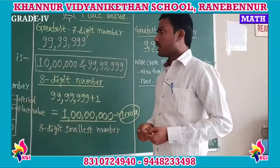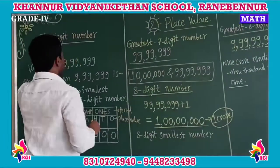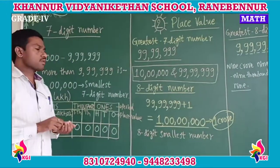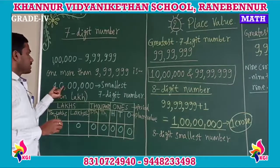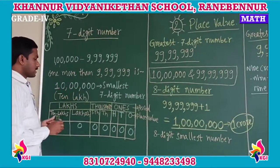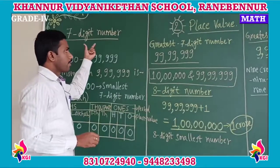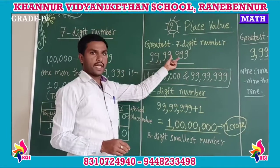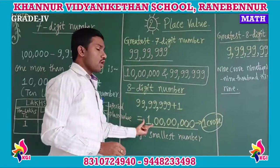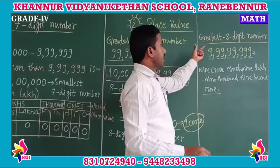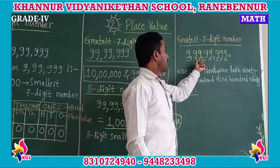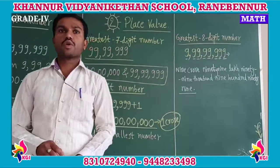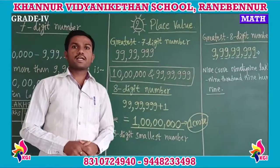In this class we have discussed seven digit and eight digit numbers. The smallest seven digit number is ten lakh, and the greatest seven digit number is ninety-nine lakh ninety-nine thousand nine hundred and ninety-nine. The smallest eight digit number is one crore, and the greatest eight digit number is nine crore ninety-nine lakh ninety-nine thousand nine hundred and ninety-nine. In the next class we will meet again. Bye.